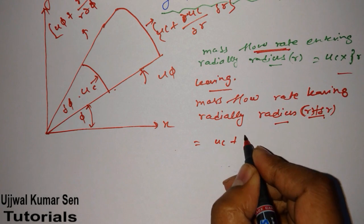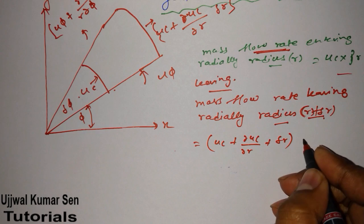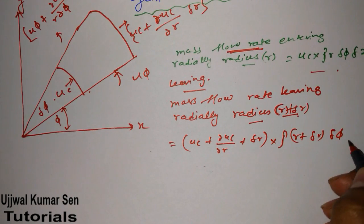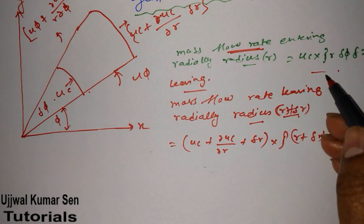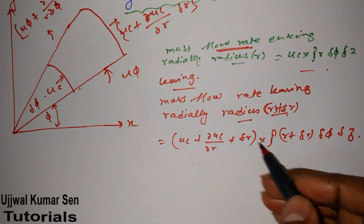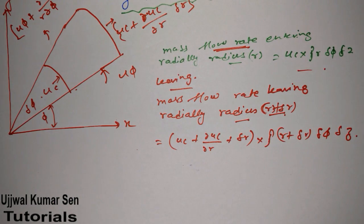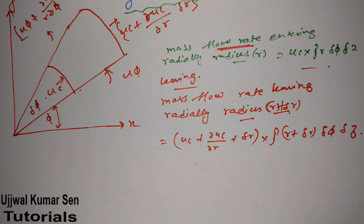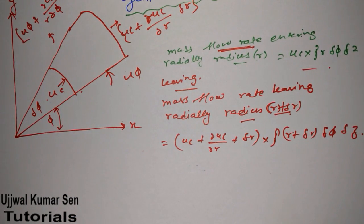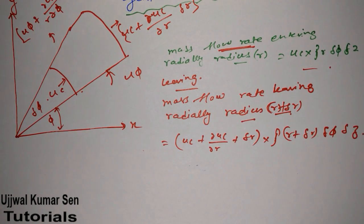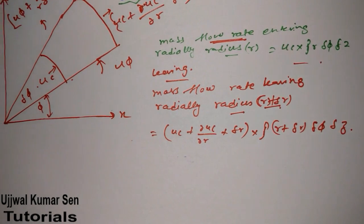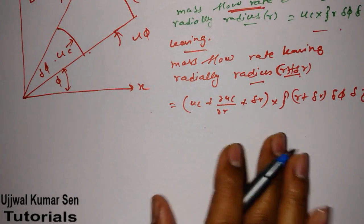In this case, the leaving mass flow rate is (u_c + ∂u_c/∂r · δr) · ρ · (r + δr) · δφ · δz. You can clearly see the differences between the entering and leaving equations — that is because of the r and (r + δr) terms. Now before finding the net flow rate remaining in this control volume, just do the multiplication of these terms.